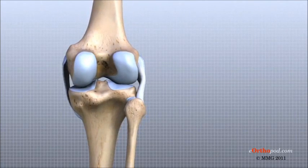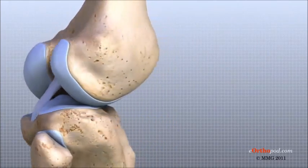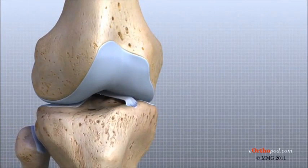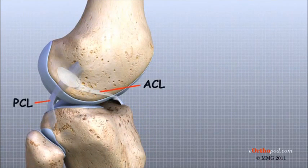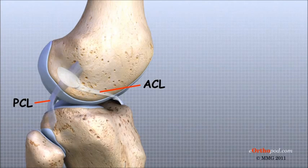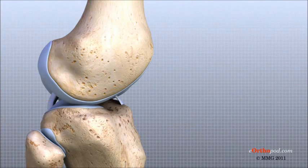The ACL and the PCL control the front-to-back motion of the knee joint. The ACL keeps the tibia from sliding too far forward in relation to the femur, and the PCL keeps the tibia from sliding too far backward. Working together, the two cruciate ligaments control the back and forth motion of the knee. Taken all together, the ligaments are the most important structures controlling the stability of the knee.